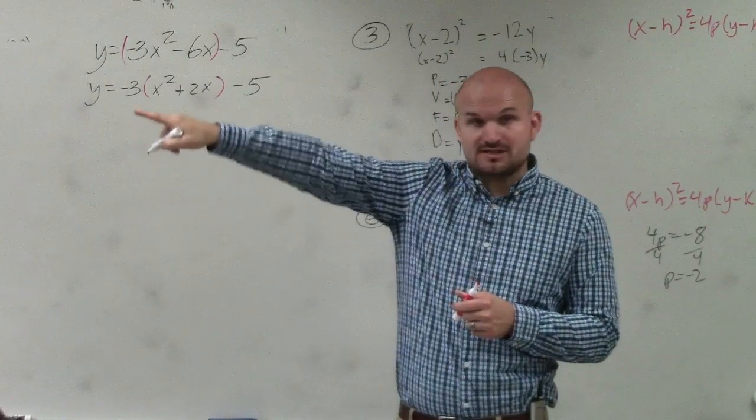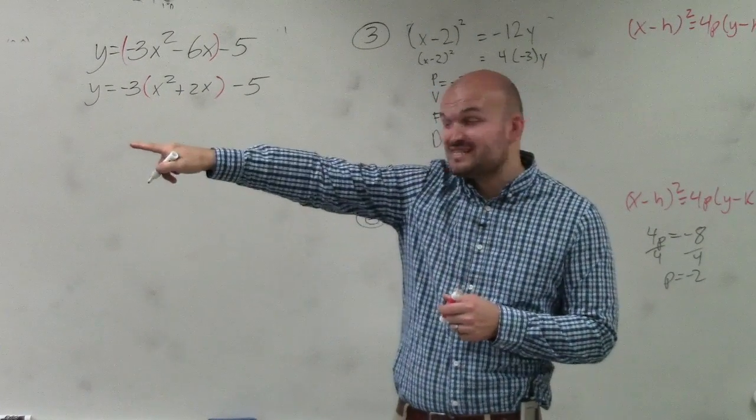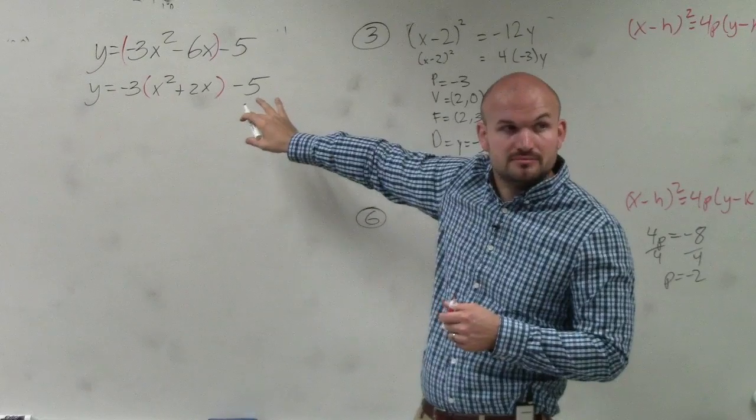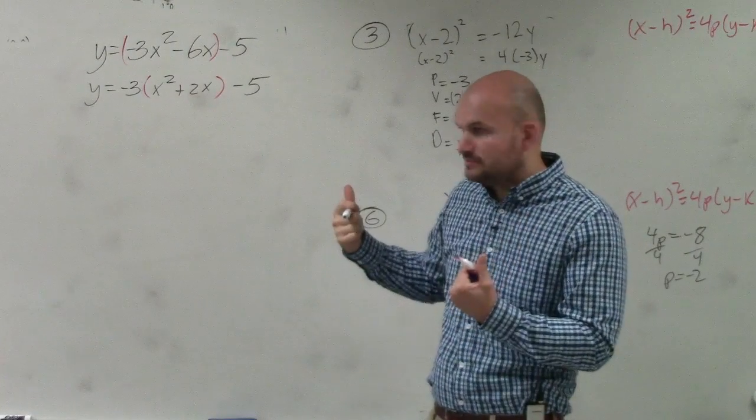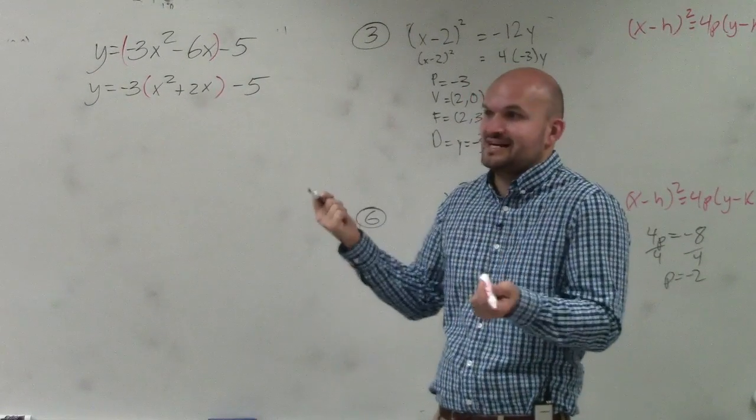You guys see how questions 1 through 4, a is all equal to 1? But 5 and 6 wasn't, so you have to do that first step. So that's good. That's all you have to do for 5 or 6 extra, basically.